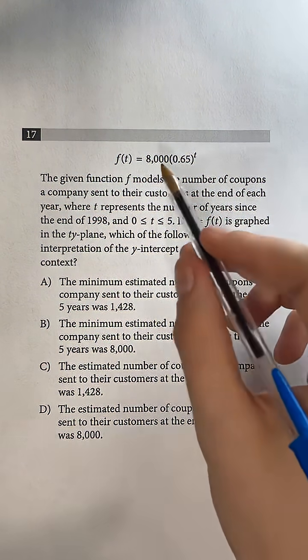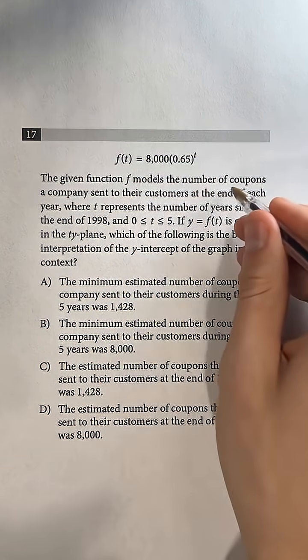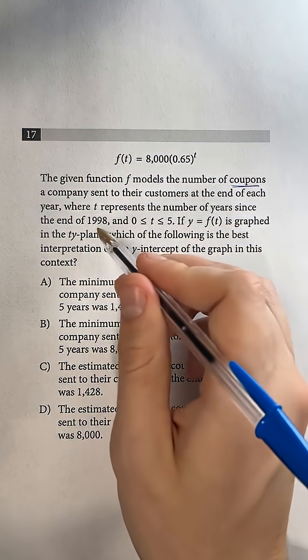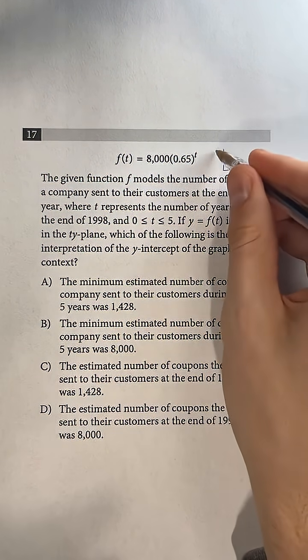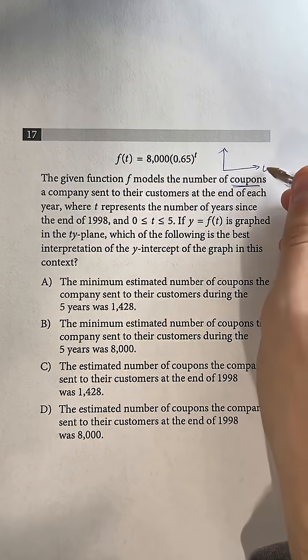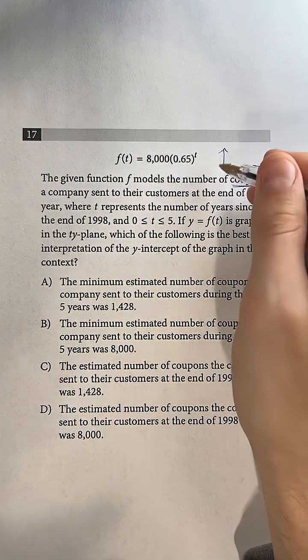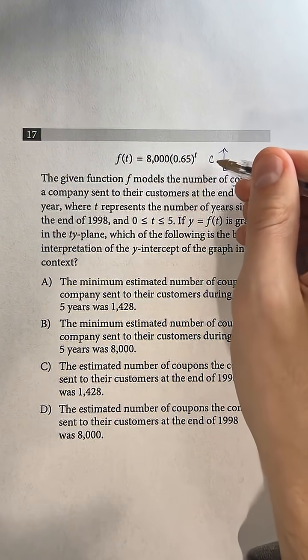If we know that f of t represents the number of coupons, and t is the number of years since 1998, that means if we have a graph that looks something like this, then this x is going to be our time, and this y-axis right here is going to be the c, the number of coupons.